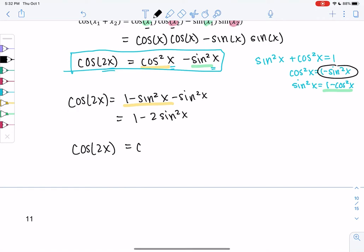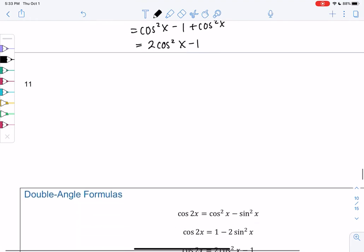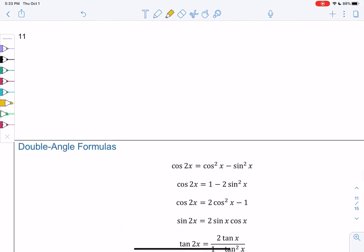We can also replace sine squared with 1 minus cosine to see what happens. So we get cosine squared, and instead of minus sine squared, we'll say 1 minus cosine squared, which is cosine squared minus 1 plus cosine squared. And we get 2 cosine squared minus 1. So cosine of 2x actually has three identities, and these are all three of them. We just kind of pick and choose depending on what's better for what we currently have. So we just derived them. Now you can use them.